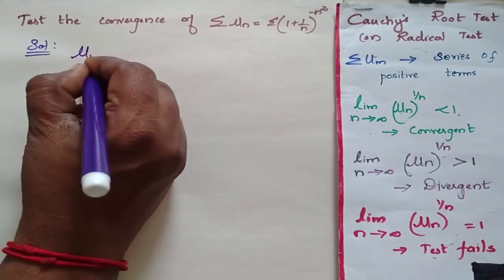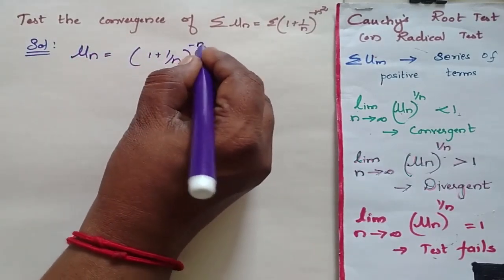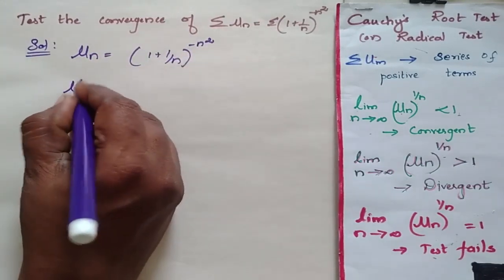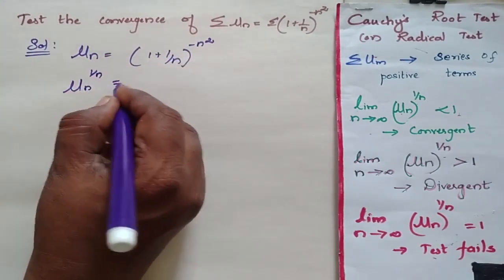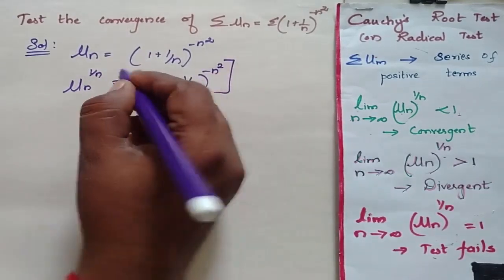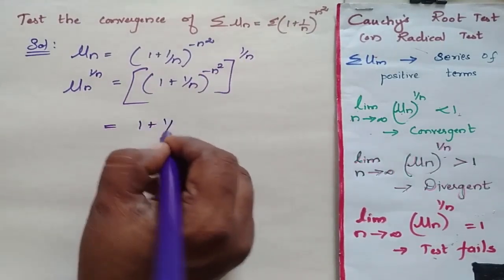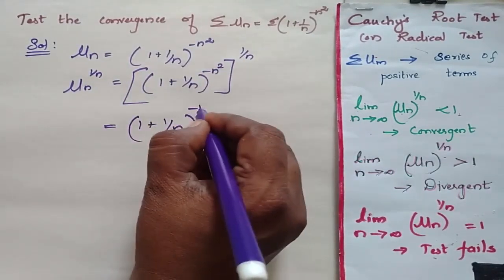Now my un is equal to 1 plus 1 by n to the power minus n square. So I am going to find un to the power 1 by n. This is equal to 1 plus 1 by n the whole power n square, this to the power 1 by n. So I will be getting 1 plus 1 by n to the power minus n.